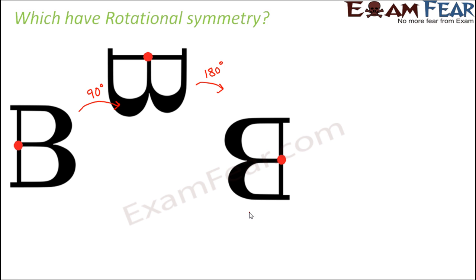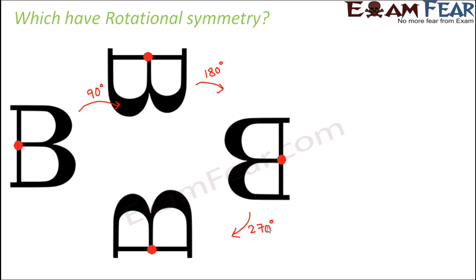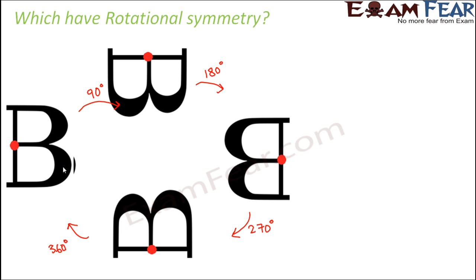Now let us rotate it further by 90 degrees, that means 180 degrees plus 90 degrees, which would be nothing but 270 degrees. So if you rotate it by 270 degrees, the shape is like this. Is this identical to the original shape? No. Now if you further rotate it by 270 degrees plus 90 degrees, which is 360 degrees — you are basically rotating the original object by 360 degrees. So what happens? You get this. Is this the same as the original object? Yes.